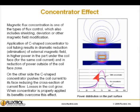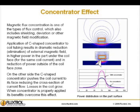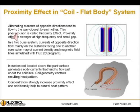The c-shaped concentrator results in higher power in the part under the coil face for the same coil current, and in reduction of power outside of the coil face zone. On the other side, the c-shaped concentrator pushes the coil current to its face, reducing the cross section of current flow. Losses in the coil grow, but when a concentrator is properly applied, its benefits overcome this effect.